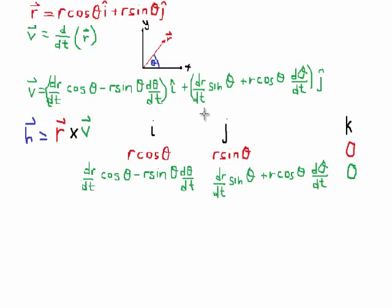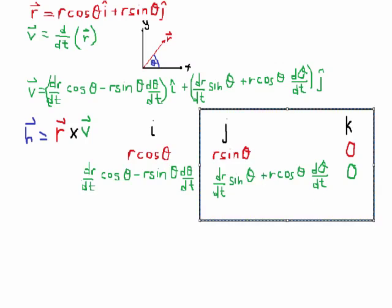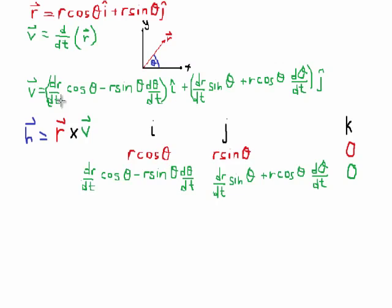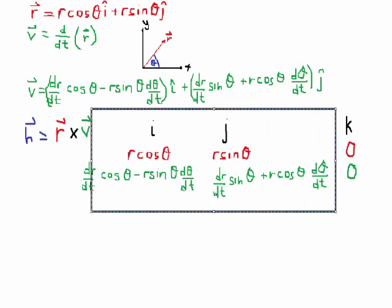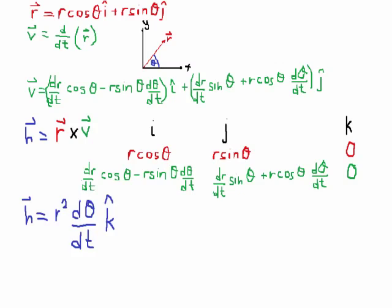When carrying out the cross product of r and v, we know that the component in the i-hat direction is equal to the determinant of this matrix, and that the component in the j-direction is equal to the determinant of this one. So we can see that the components in the i-hat direction are equal to 0. And that if we can find an expression for the determinant of this matrix, it will give us the component in the k-hat direction. The expression for the determinant, once you make some cancellations and use the trigonometric identity sin squared theta plus cos squared theta equals 1, becomes h equals r squared d theta over dt in the k-hat direction.